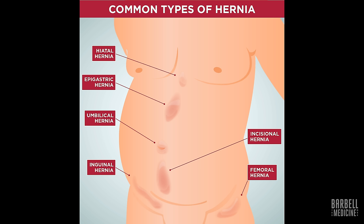Similarly, groin hernias occur in the lower region of the abdomen, the groin, where the thigh meets the hip. There are two major types: femoral and inguinal. Inguinal hernias occur along the inguinal canal, typically above, whereas femoral hernias occur typically below the inguinal canal. There are many other types of hernias, but we're going to focus on inguinal hernias in this video.